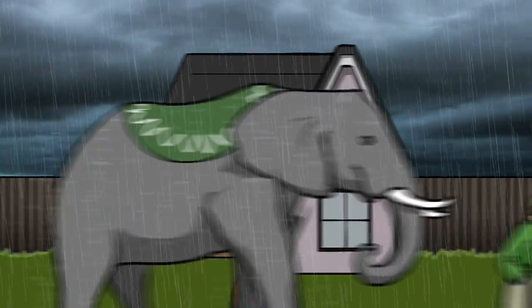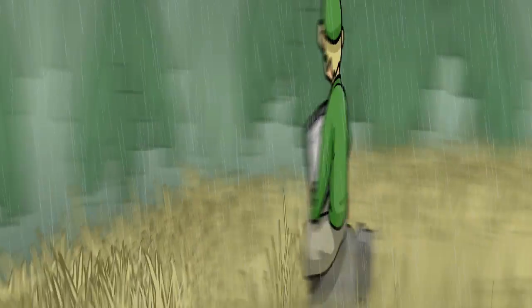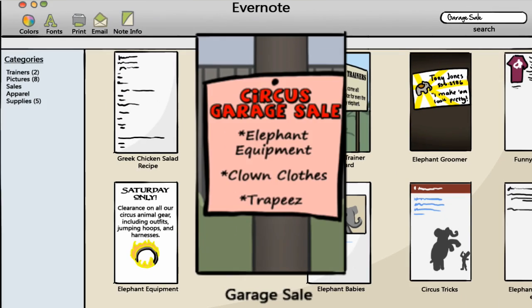Evernote does some pretty smart stuff too, like text recognition. So if you're walking down the street and you see a flyer for a garage sale this Saturday, and you snap a picture of that flyer with your cell phone and save it to Evernote, back at your computer, if you search for the words garage sale, Evernote will show you that image.